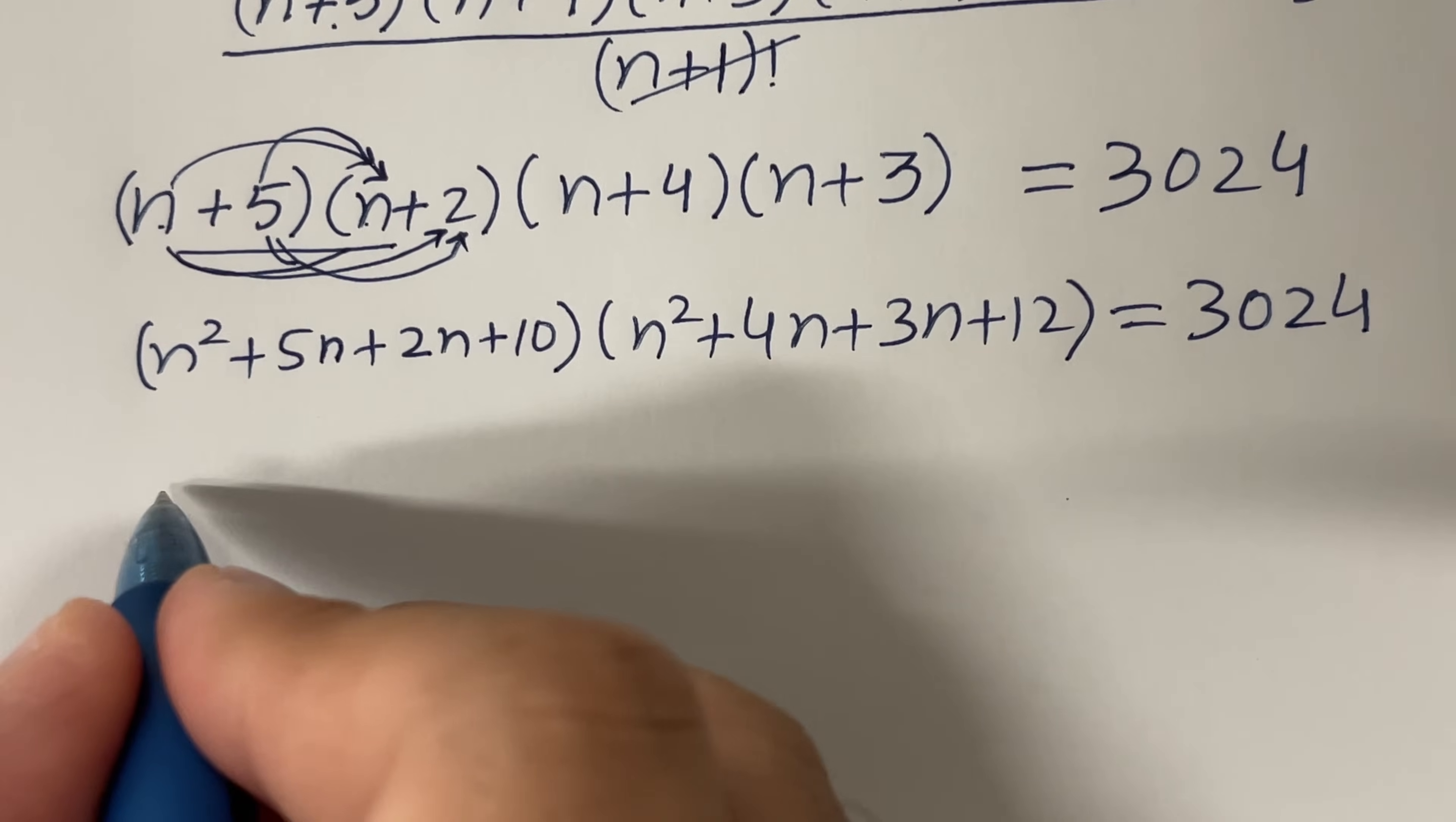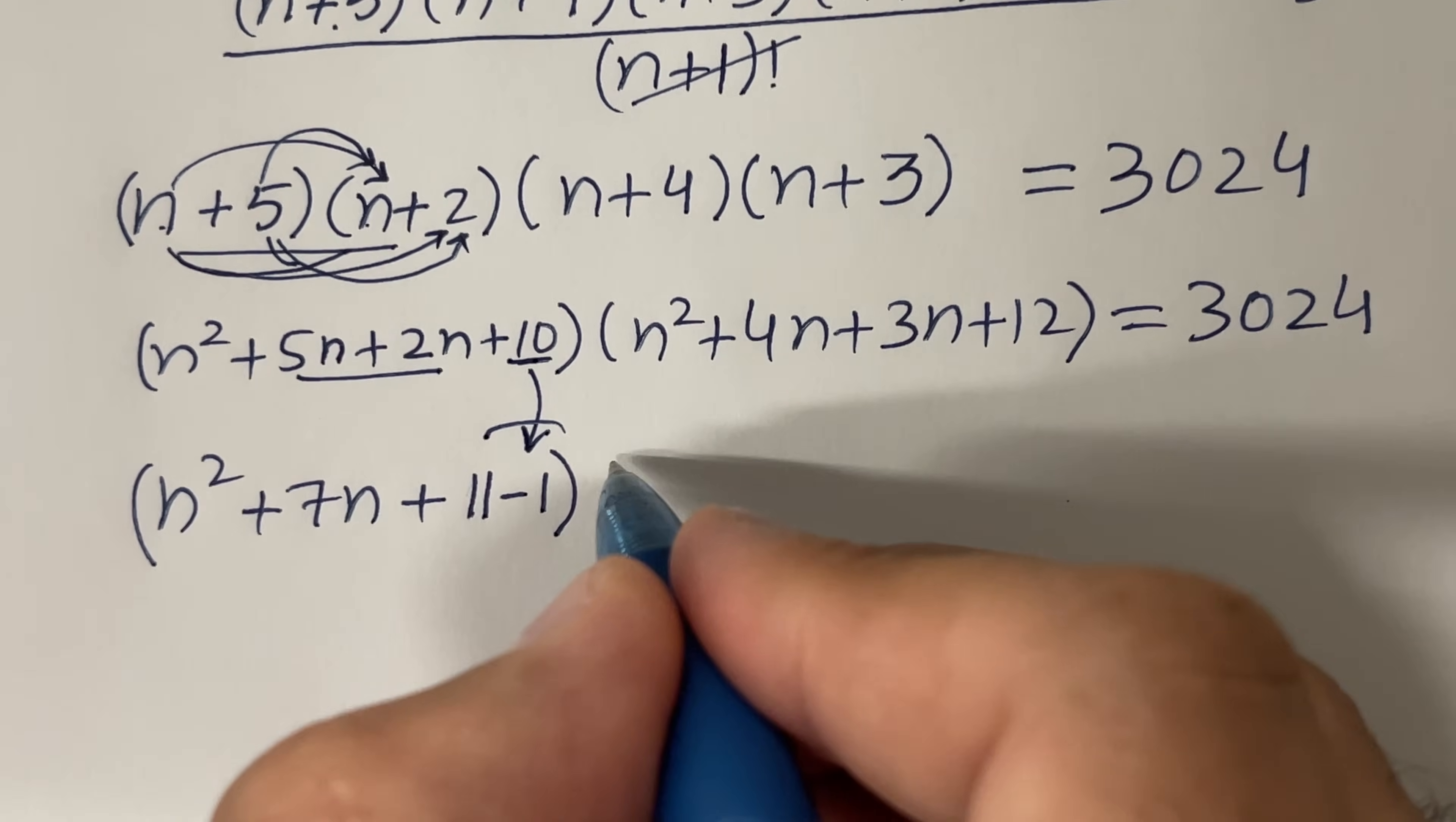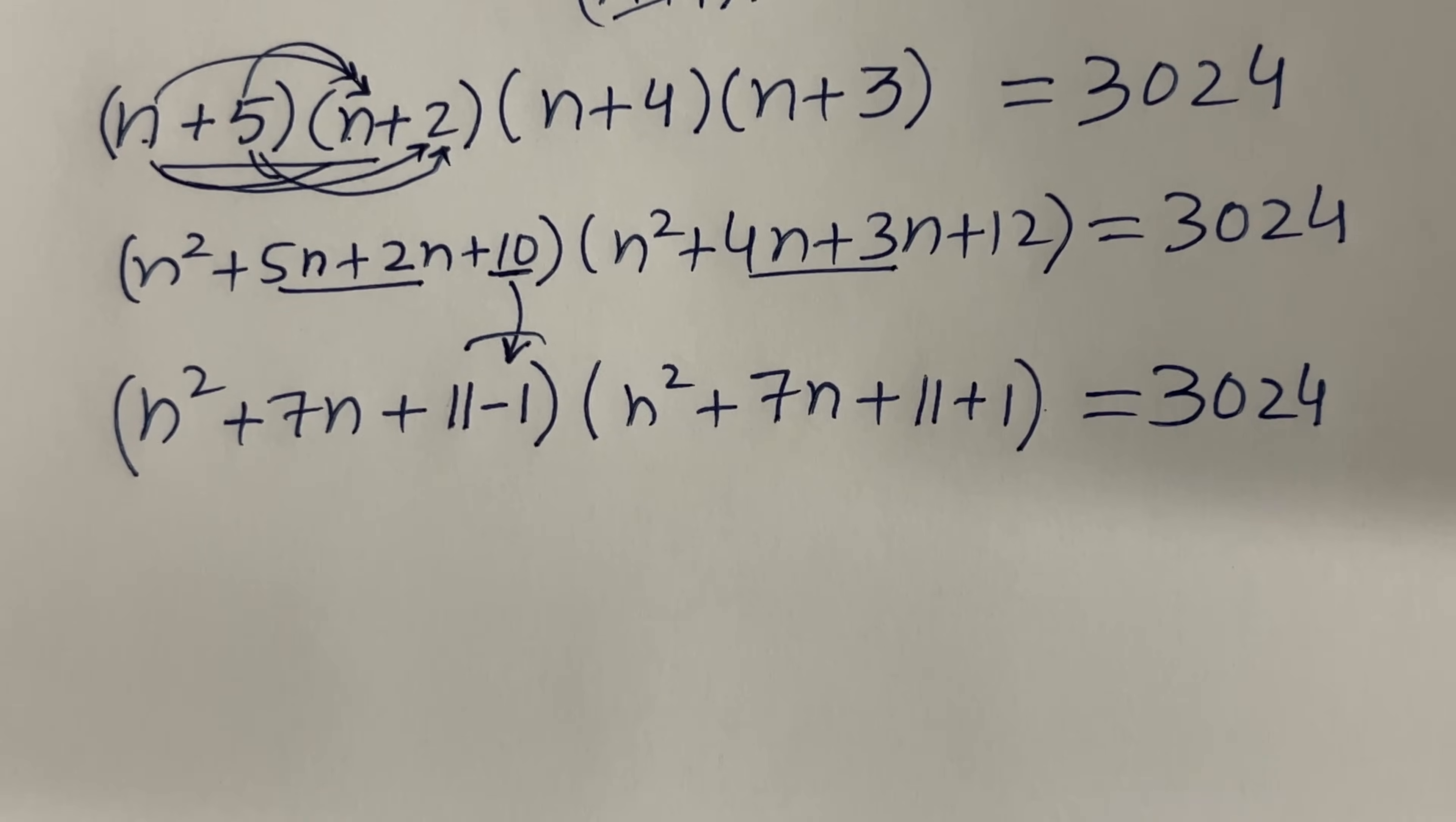Now we have n² + 5 + 2 is 7n, plus we have 10 here which can be written as 11 minus 1. I am writing this 10 as 11 minus 1. And similarly, here I have n² + 7n plus, can you guess how can I write 12? 12 as 11 plus 1, and the right-hand side is 3024.